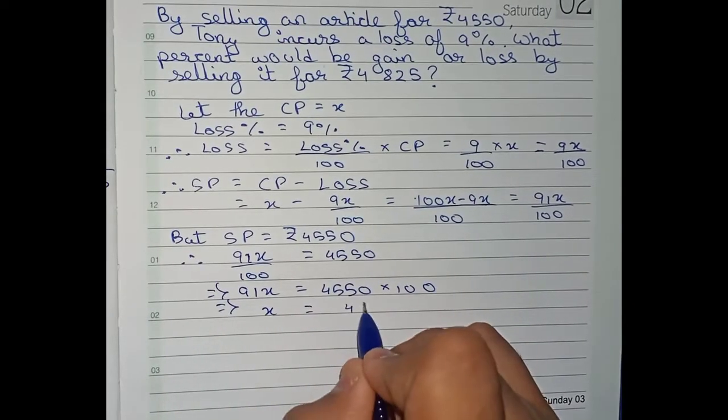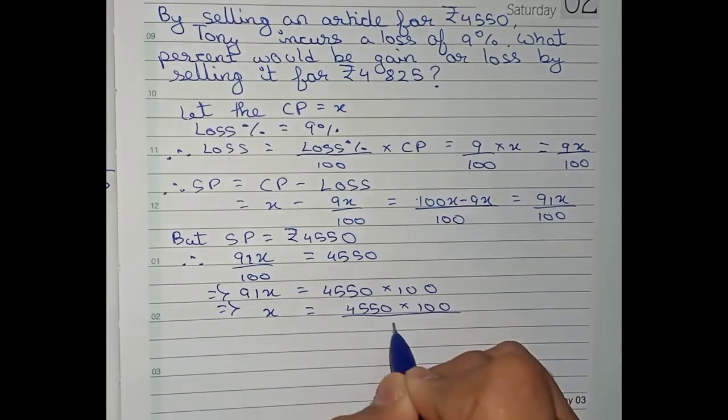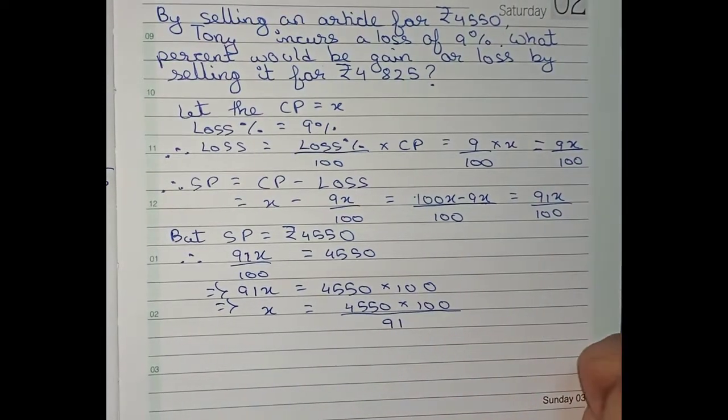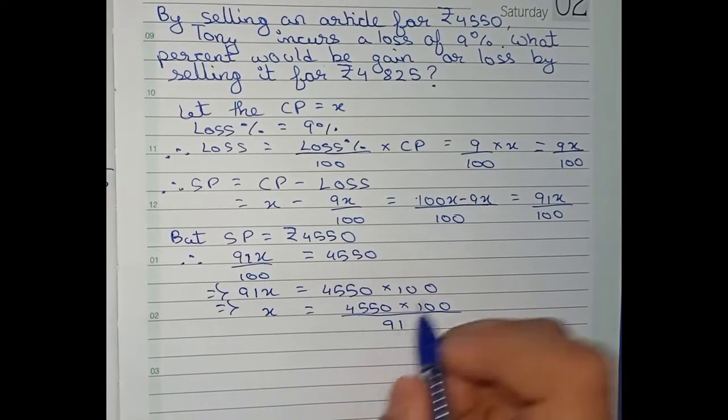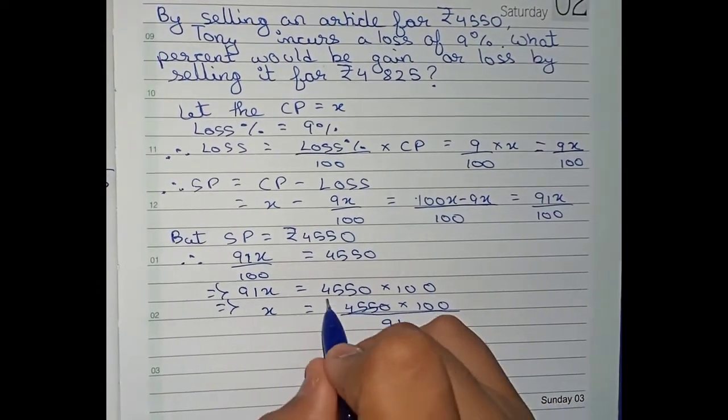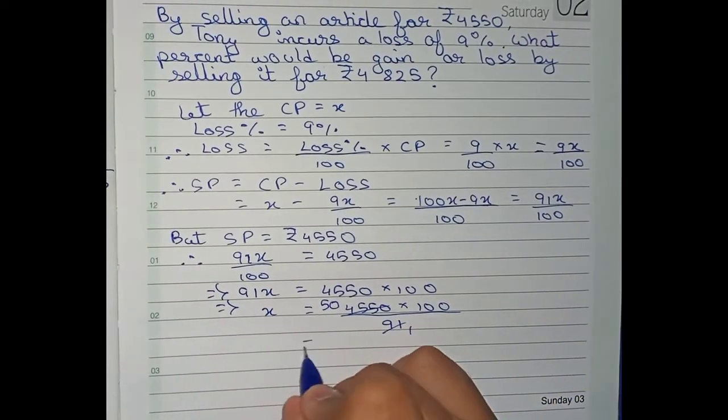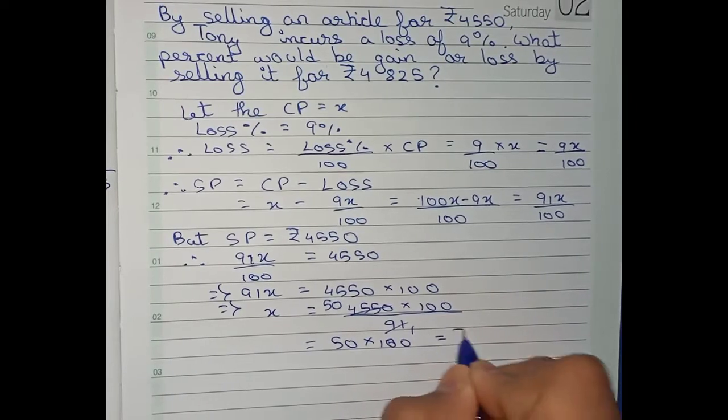And write x equals to 4550 into 100 by 91. As we are taking 91 from left side to right side, it goes for division. So now I can cut 91 and 4550 directly. It will become 50 by 1, so 50 into 100, that is equal to Rs. 5000.